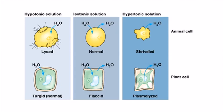In a hypotonic solution, the concentration of solute is greater inside the cell than outside. So the water from outside moves inside the cell because inside the water concentration is less. In plants also, you will see the water coming inside. Such a type is called a hypotonic solution.